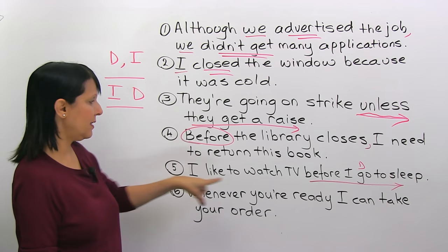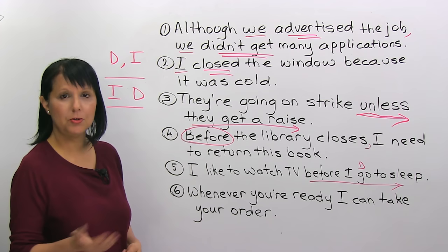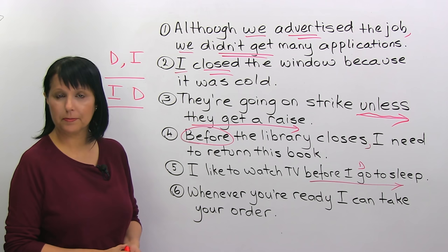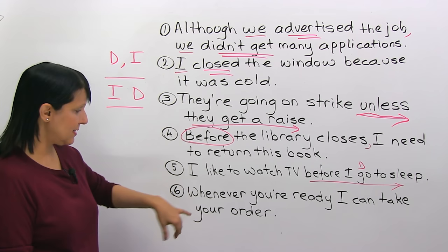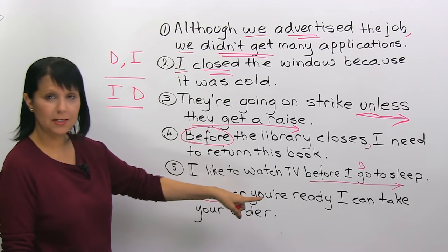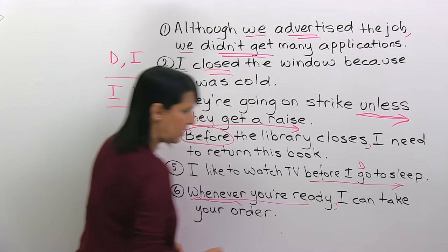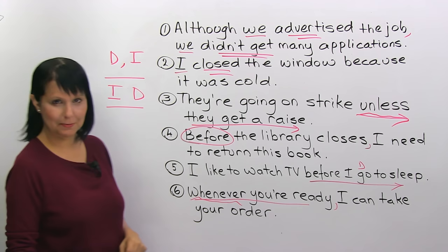Number six: 'Whenever you're ready, I can take your order.' 'Whenever' is like 'when' — it's a subordinating conjunction, so 'whenever you're ready' is the dependent clause and it comes first. So: 'Whenever you're ready, I can take your order.' Remember the rule: dependent clause first, then comma, then independent clause. Independent clause first, no comma, followed by dependent clause.